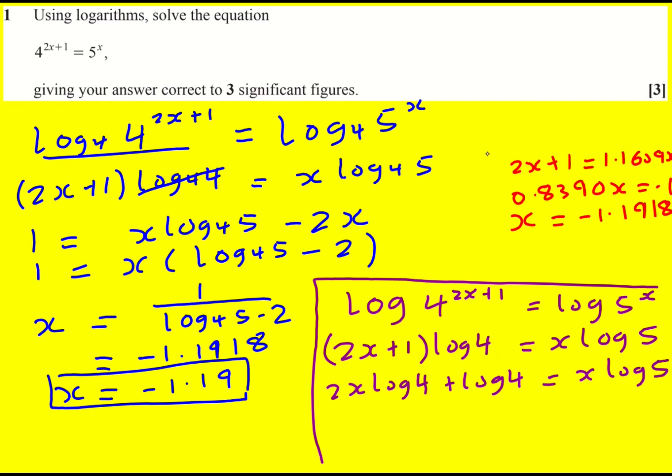Okay and you can either do my second method and kind of substitute in or we're going to do it exactly. So log 4 will equal, I'm going to factorize the x out, log 5 minus 2 log 4. And then x would equal log 4 over log 5 minus 2 log 4.